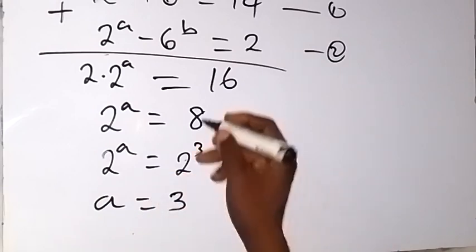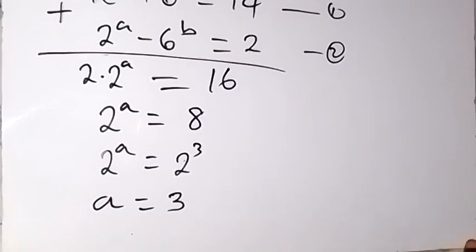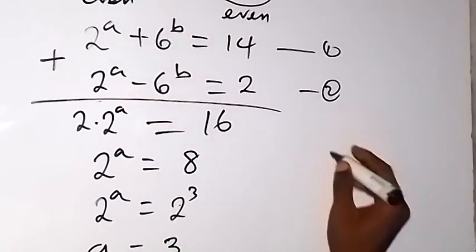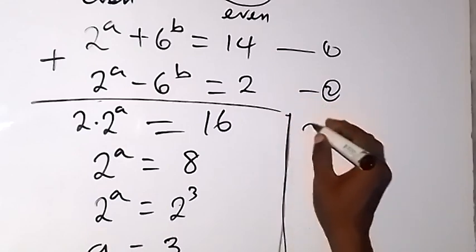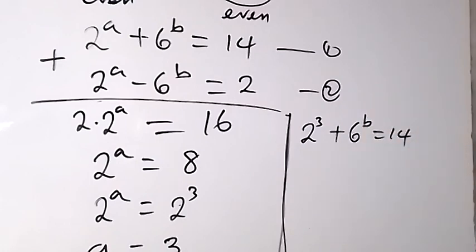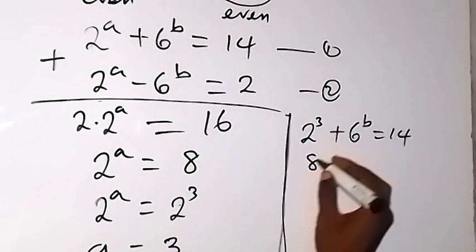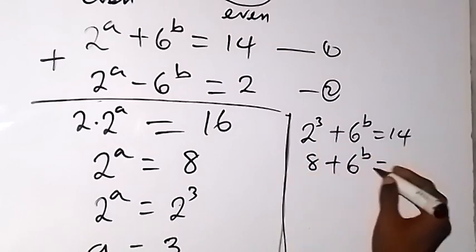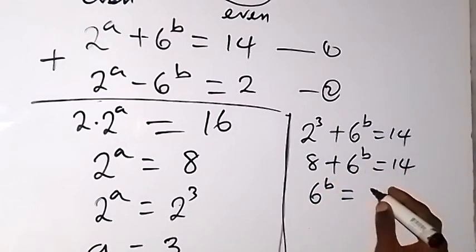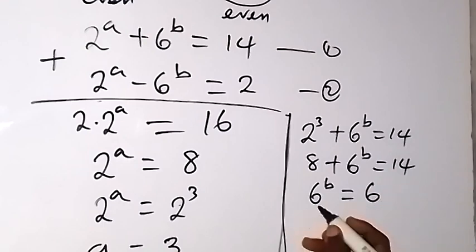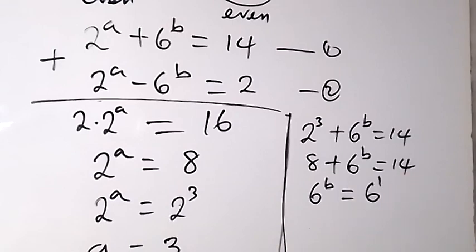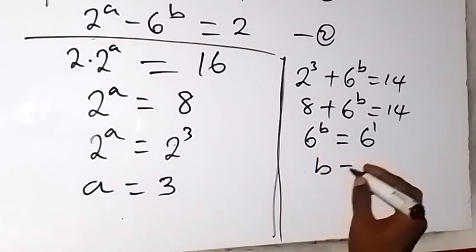Since a equals 3, we can find b using equation 1. Substituting a equals 3 gives 2 raised to power 3 plus 6 raised to power b equals 14, so 8 plus 6 raised to power b equals 14. Taking 8 to the other side, 6 raised to power b equals 14 minus 8, which is 6. Since 6 equals 6 raised to power 1, b equals 1.